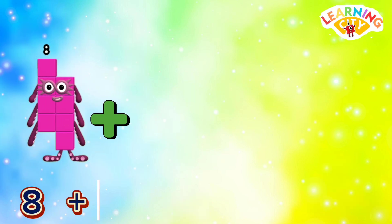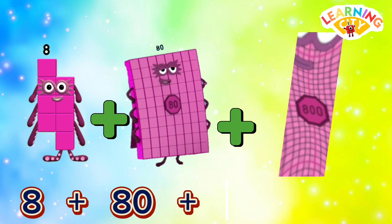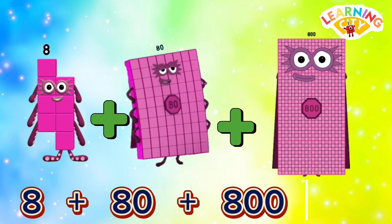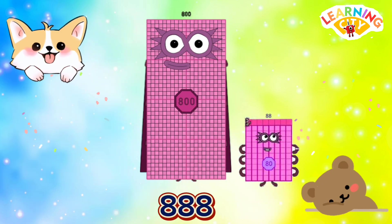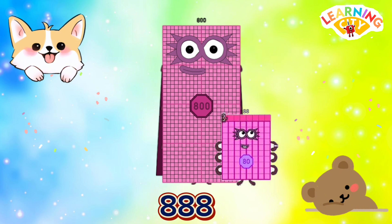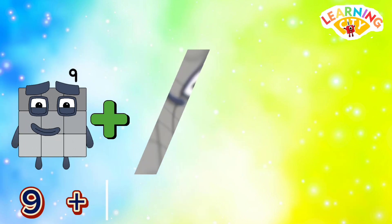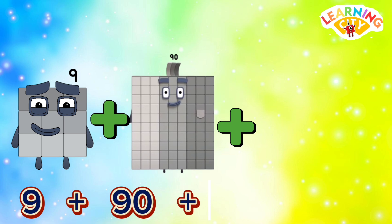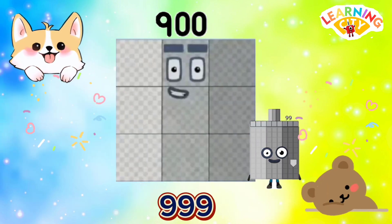8 plus 80 plus 800 is equals to 888. 9 plus 90 plus 900 is equals to 999.